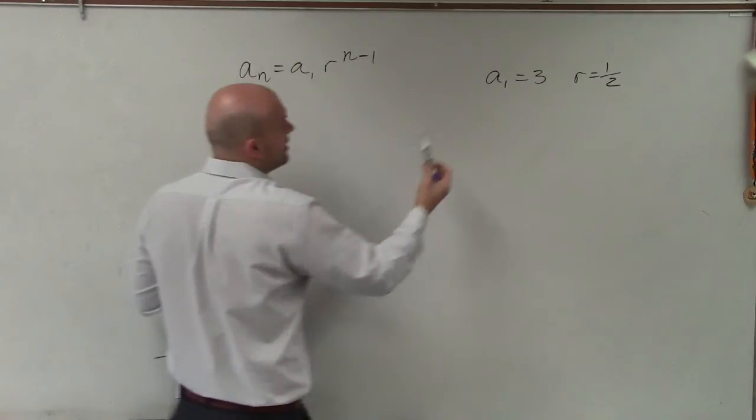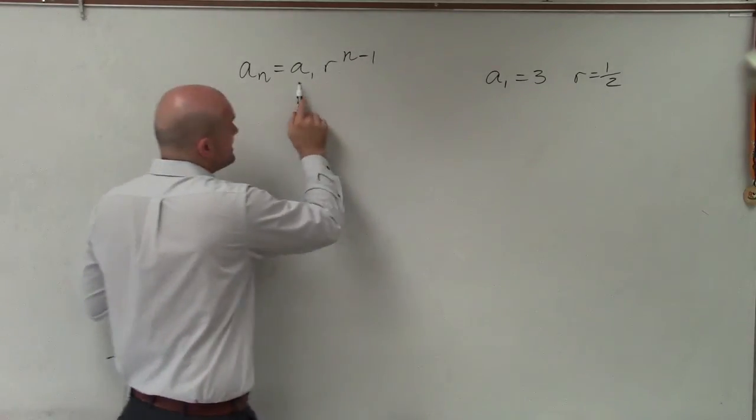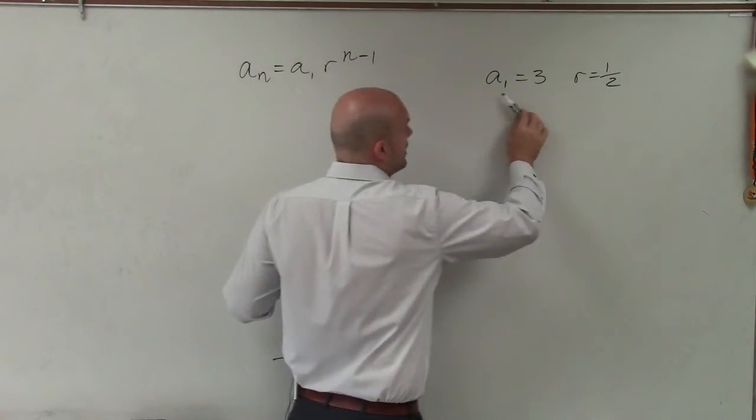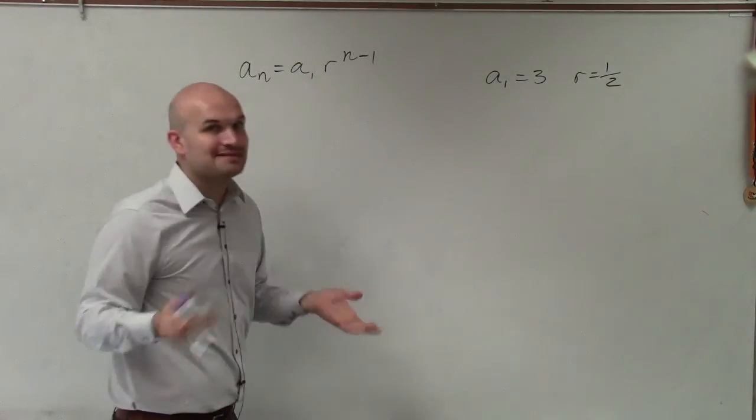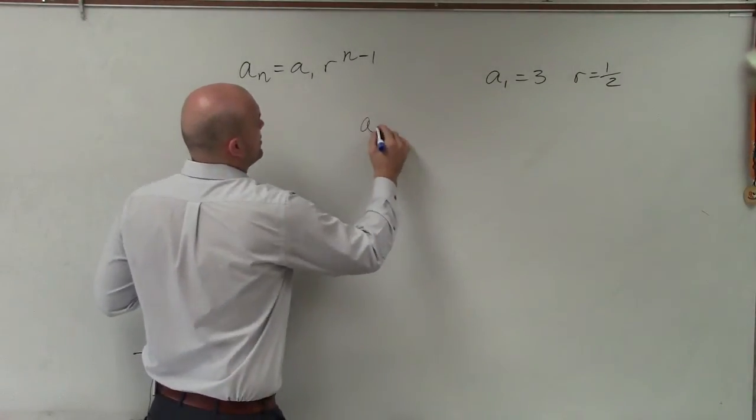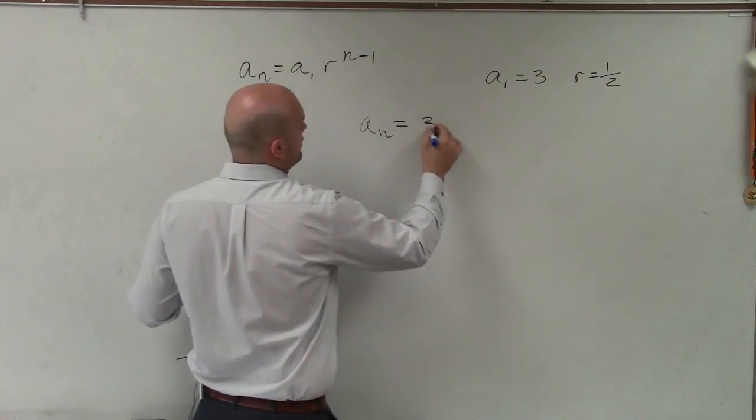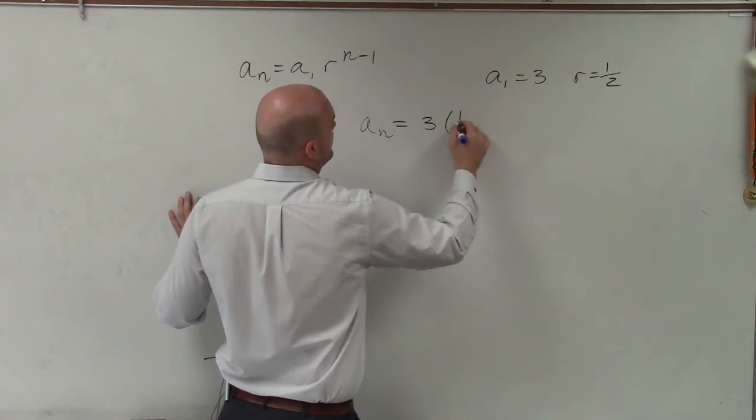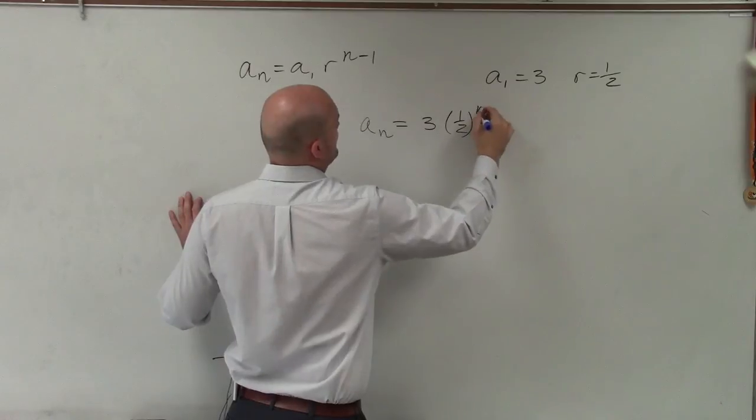So to figure that, to write the rule, we need to know what a sub 1 and what r is. Well, fortunately for us, that's provided in this example. So I have a sub n equals a sub 1, which is 3, times r, which is 1 half, raised to the n minus 1.